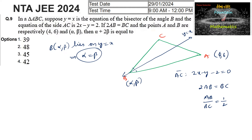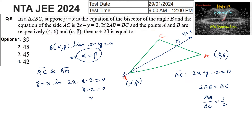Since y = x and the line AC intersect at point M, we put y = x into the AC equation: 2x - x - 2 = 0, that is x - 2 = 0, so x = 2 and y = 2. Therefore, the point M is (2, 2).